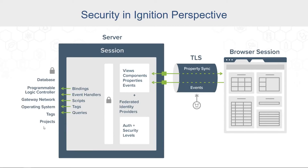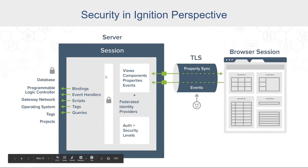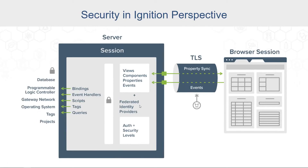We don't want to expose any of that to the person using the application. Perspective has a whole layer of security right in front of all those protected resources. When you establish that session, we know who that person is and what permission levels they have — determined through federated identity providers. So if someone tries to write to a tag, that request must go through this layer on the server to check whether they are allowed to do that. If not, it's rejected — there's no way for that browser session to bypass it. That's one way we can really restrict what people are allowed to do and how they interact with the server.